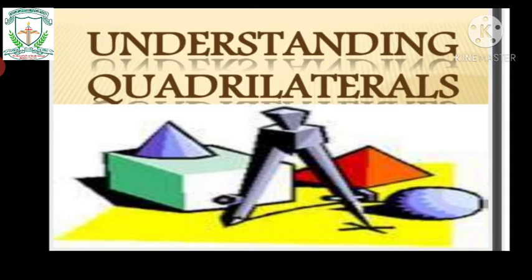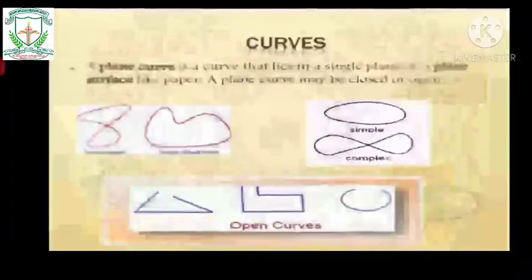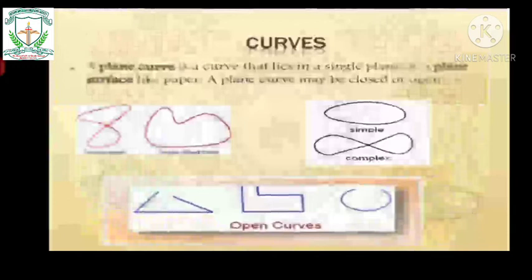In this lesson we are going to analyze shapes. Analyzing the shapes, we can say that curves can be of two types: closed curves or open curves. A plane curve is a curve that lies in a single plane or a plane surface like paper. A plane curve may be closed or open. There are two types of curves: closed curve and open curve.